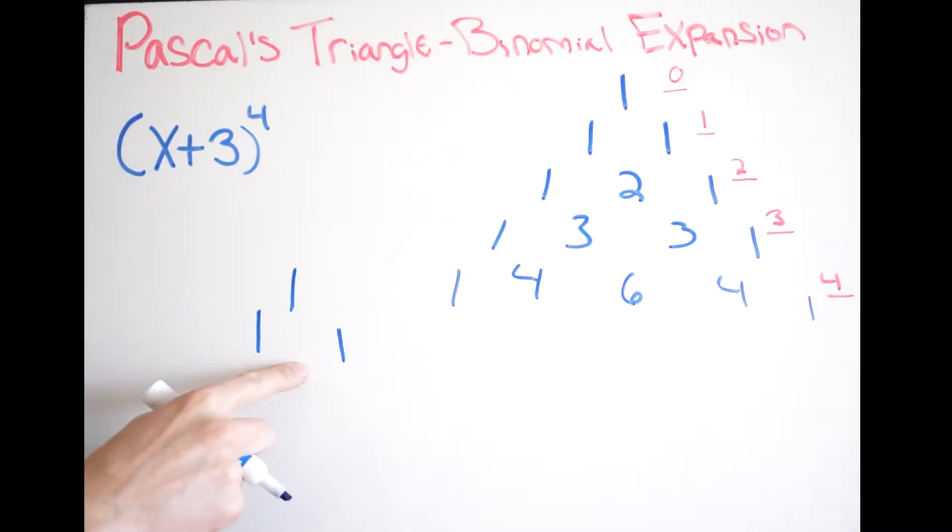And then you simply just add, so one plus one is two, and then add a one and a one on the outside. And you continue with that pattern. So again, here I'm going to add one plus two is three, two plus one is three, and then add one on both sides. And you just continue on with that pattern for as long as you need.